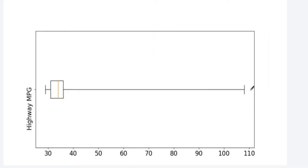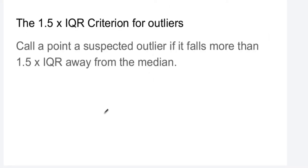This is called the 1.5 times IQR criterion for outliers. We call a point a suspected outlier if it is more than 1.5 IQRs, 1.5 interquartile ranges away from the median.